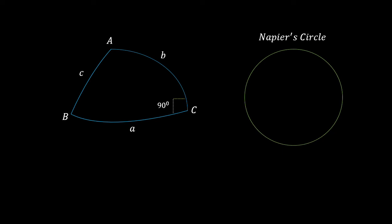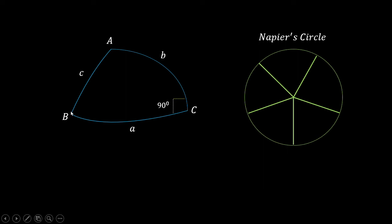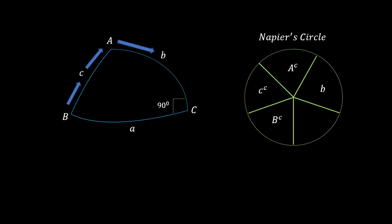For Napier's circle, we will divide it into five parts as shown here. We can see that 'c' is facing 'b', 'c', and 'a'. These three — facing the angle — will be made into their complements. So we place them as b-complement, then c-complement, then a-complement, and then b.